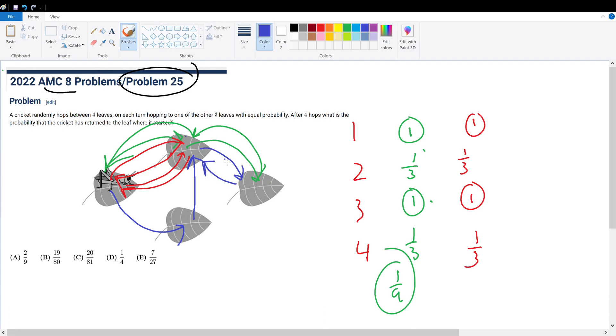So the cricket must go back down to the corresponding leaf, and then hop back for a total of four hops. That will work. So what is the chance of this happening?